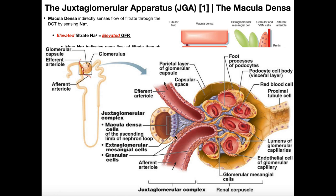Also notice at the afferent arteriole, we have specialized smooth muscle that lines the endothelial cells. These smooth muscle cells are called granular cells, also called juxtaglomerular cells. We'll hint at their exact function in this video, but we'll talk more in detail about how they regulate the diameter of the afferent arteriole in the next video.